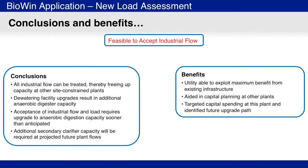Based on the Biowind analysis, it was concluded that all of the industrial flow could be treated, thereby freeing up capacity at other site-constrained plants. The model analysis also provided guidance for future capital improvements required at the plant. For example, acceptance of the industrial flow meant that anaerobic digester capacity would require upgrading sooner than anticipated.